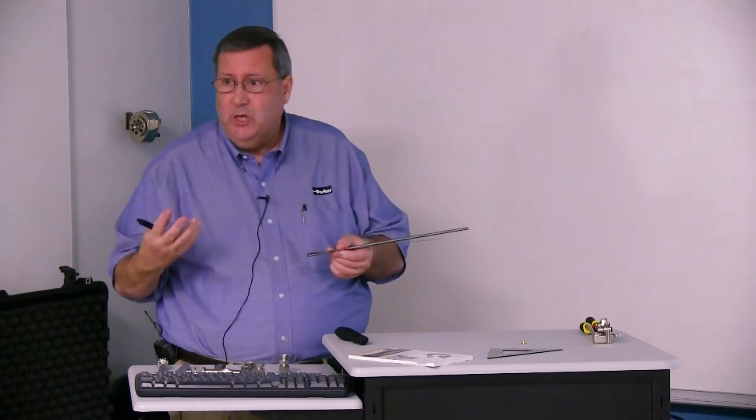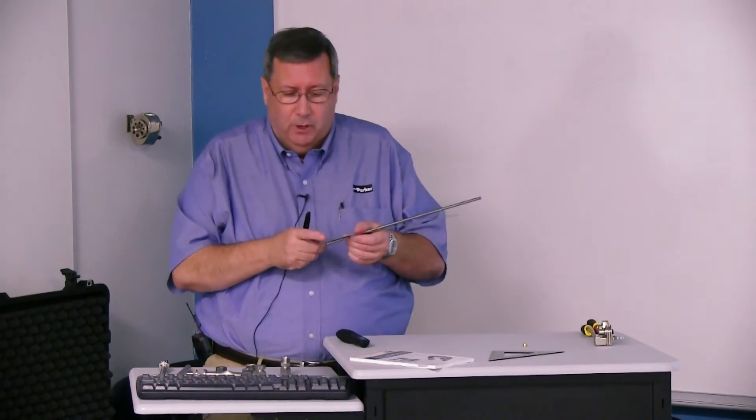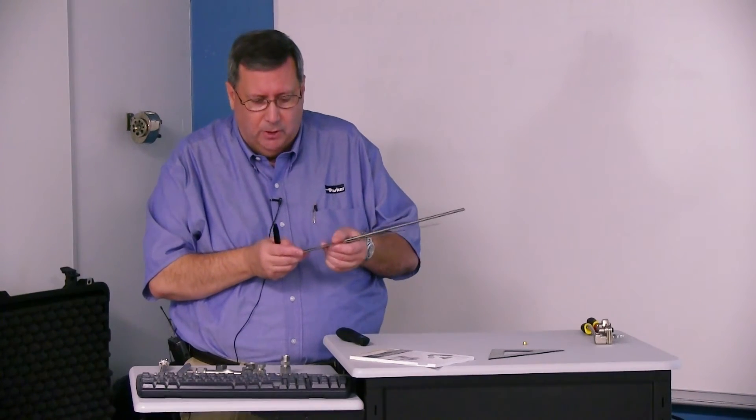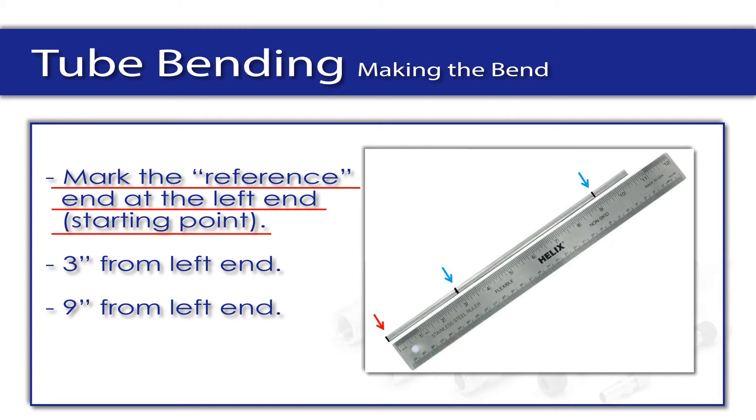There's some other rulers we used to have with this class that were plastic. The zero was indented a little bit. But the zero mark is at the very end. What we want to do, we want to put a little mark at three inches and at nine inches.